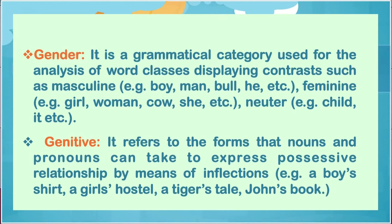Gender — it is a grammatical category used for the analysis of word classes displaying contrasts such as masculine (e.g., boy, man, bull, he), feminine (e.g., girl, woman, cow, she), and neuter (e.g., child, it). Genitive — it refers to the forms that nouns and pronouns can take to express a possessive relationship by means of inflections — for example, a boy's shirt, a girl's hostel, a tiger's tail, John's book.